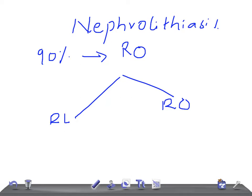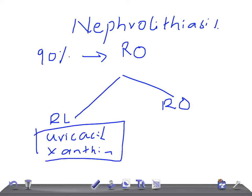What are the radio lucent stones? We have two types: uric acid stones and xanthine stones. These are the two important radio lucent stones.